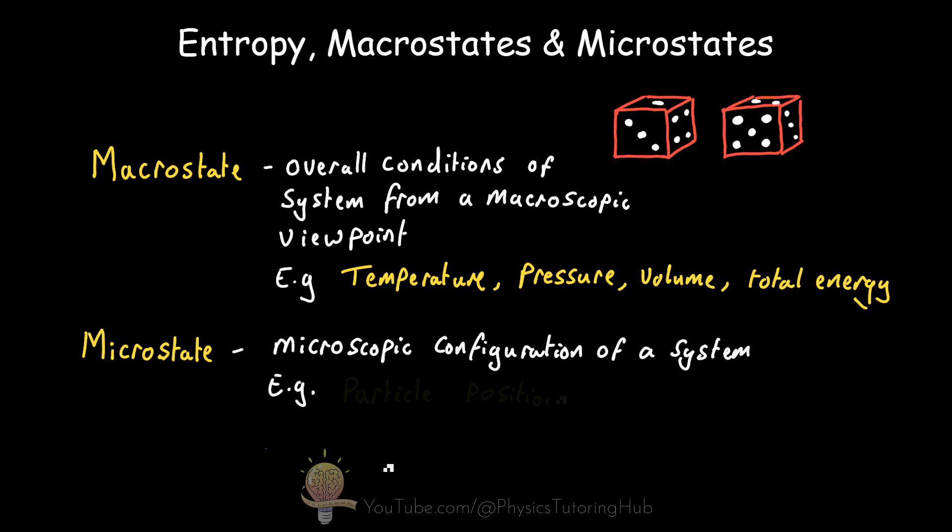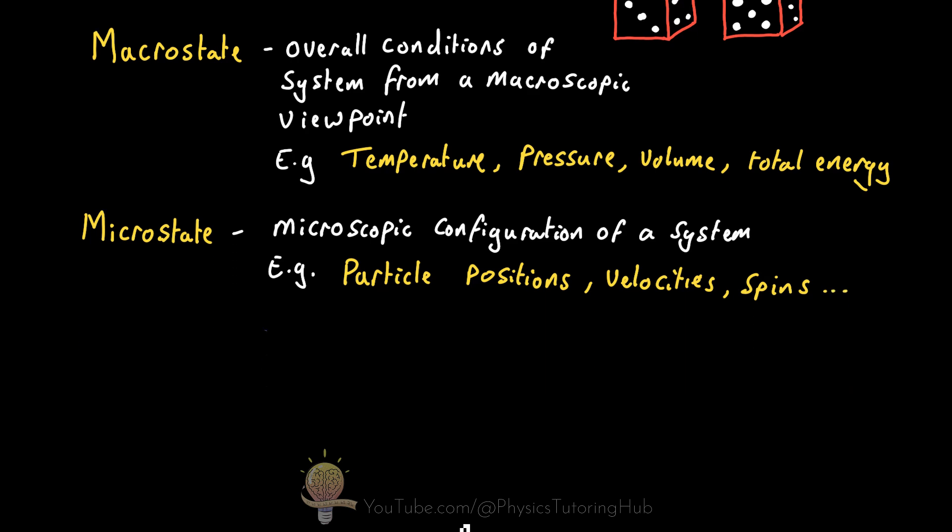A microstate is a specific microscopic configuration of a system. For example, the exact positions, velocities, spins, and other measurable properties of each atom or molecule. In fact, there can be many different microstates for a single macrostate.